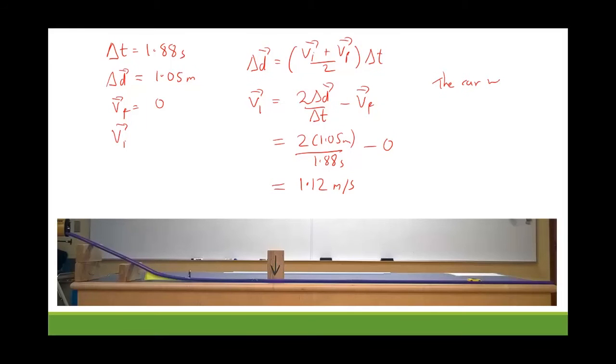So there's our final solution. The car was travelling at about 1.12 meters per second when it passed the marked point. Problem solved. That's good. I know what I did. But if you handed me that problem, I would not find this a satisfactory solution. And here's why.